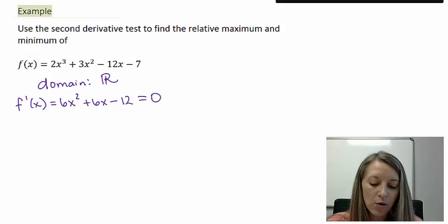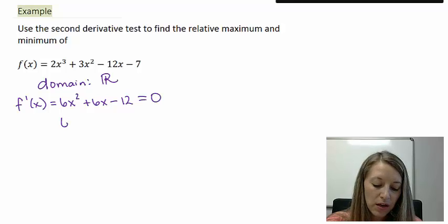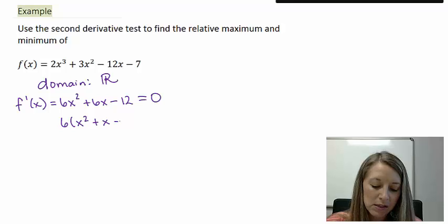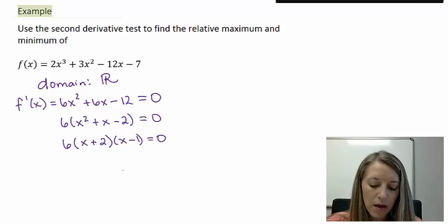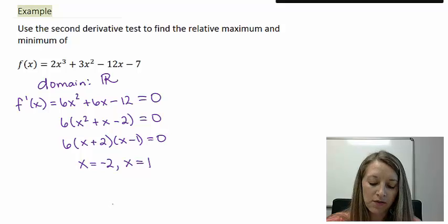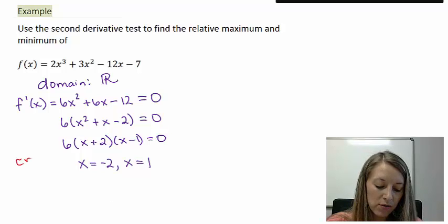Next, we take the derivative: f prime of x equals 6x squared plus 6x minus 12. We set that equal to zero. Factoring out a common factor of 6 gives us x squared plus x minus 2, and continuing to factor using the trinomial method gives us (x + 2)(x − 1). Setting each factor equal to zero gives us critical values of x equals negative 2 and x equals positive 1. These are our possible extrema — maximums, minimums, or plateaus.